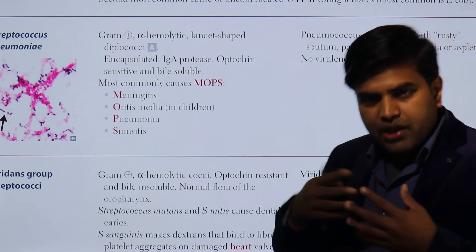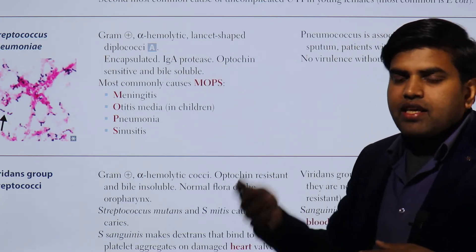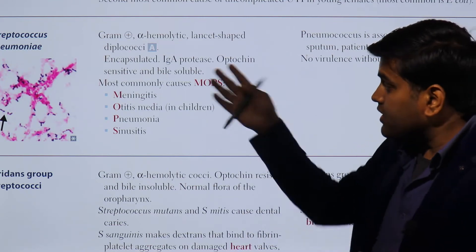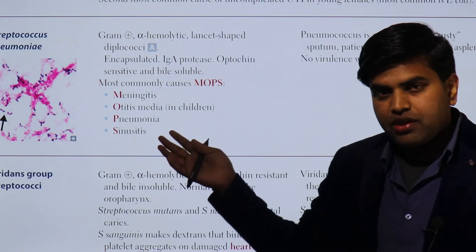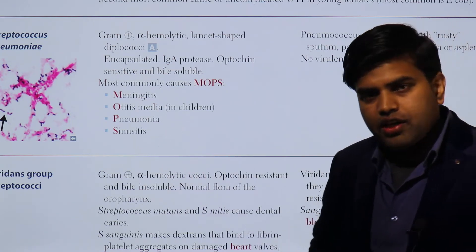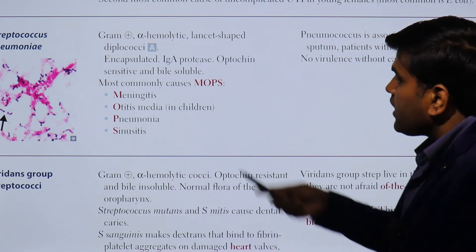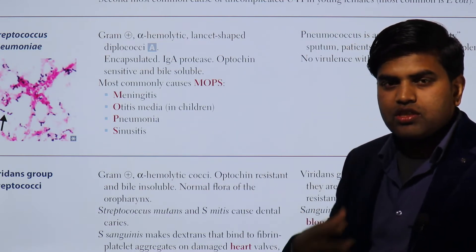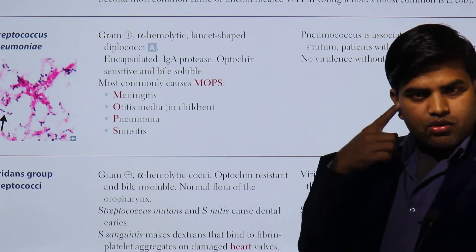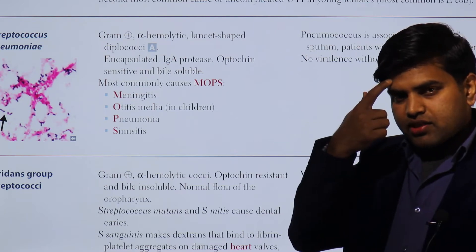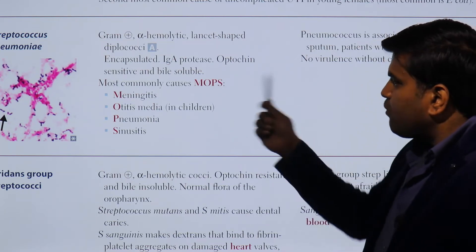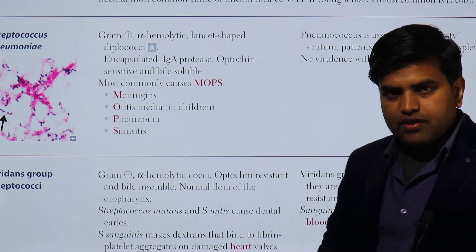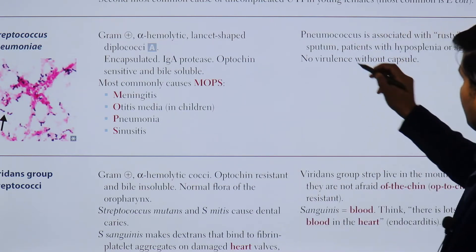Any bacteria containing IgA protease can bypass the protective IgA layer, break it down, expose the epithelial cells, and easily cause disease. Combined with its capsule preventing phagocytosis, this allows streptococcus pneumoniae to cause pneumonia, meningitis, otitis media, and sinusitis. You can remember these diseases with the mnemonic MOPS: Meningitis, Otitis media, Pneumonia, and Sinusitis.